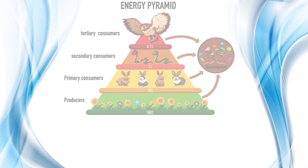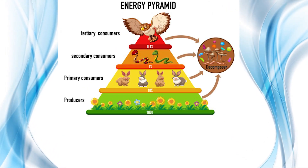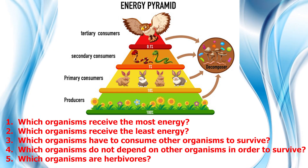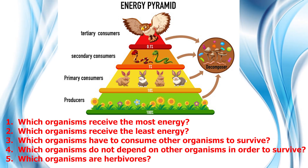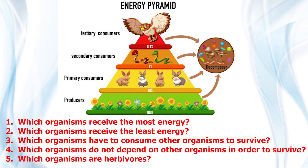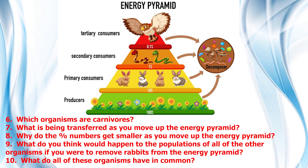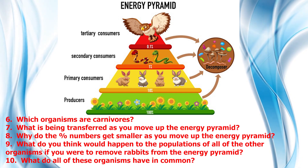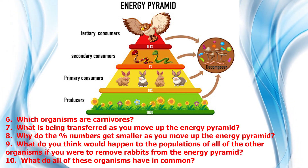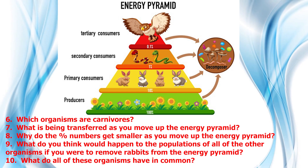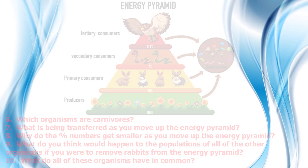Let's look at another example. Several questions can be asked about this diagram: Which organism received the most amount of energy? Which organism received the least? Which organisms have to consume other organisms to survive? Which organisms do not depend on others to survive? Which organisms are herbivores? Which are carnivores? What is being transferred as you move up the energy pyramid? Why do the percentage numbers get smaller as you move up? What would happen to the populations of all other organisms if you removed rabbits from the energy pyramid? What do all these organisms have in common? We are confident that you have all the answers.